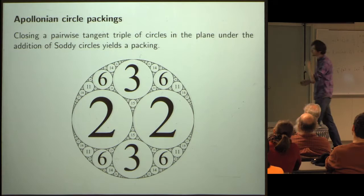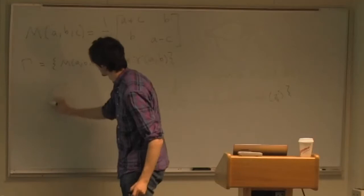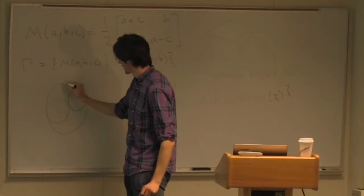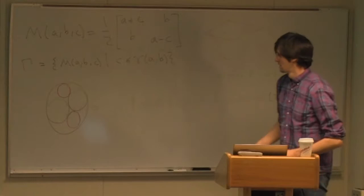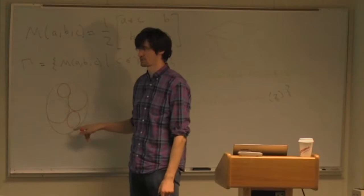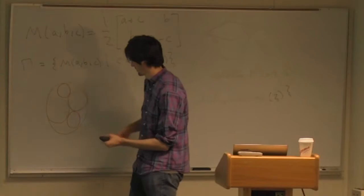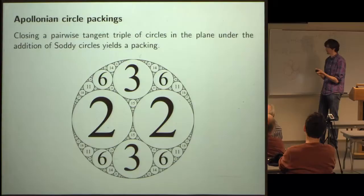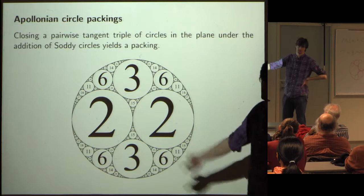What is an Apollonian circle packing? You start with three pairwise tangent circles, then close under the addition of Soddi circles. For any three pairwise tangent circles in the plane, there are always exactly two Soddi circles — circles tangent to all three. You add those in, which creates new triples, each with two Soddi circles, and so on. Starting from any triple of pairwise tangent circles and closing under Soddi circles gives a packing like this.